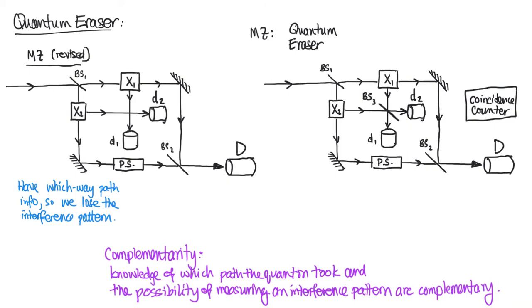But interference can be recovered by doing the following. If we bring in a coincidence counter that only counts events when both detector 2 fires. So I'm connecting in this red line an electrical cable from my detector big capital D to my coincidence counter and I'm going to do the same for d2. If I connect d2 and big D in coincidence and I only count events when both d2 and D are firing then that data set does show interference.